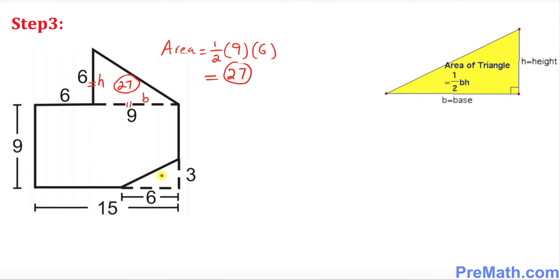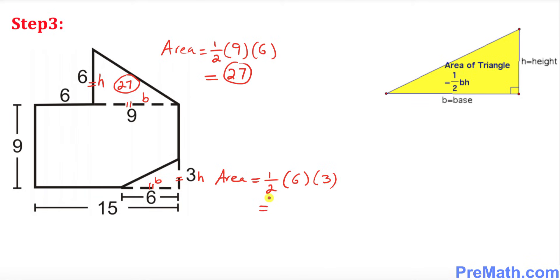Similarly, we find the area of the smaller right triangle. The base is 6 and the height is 3. So area = ½ × 6 × 3, which equals 9 square units.